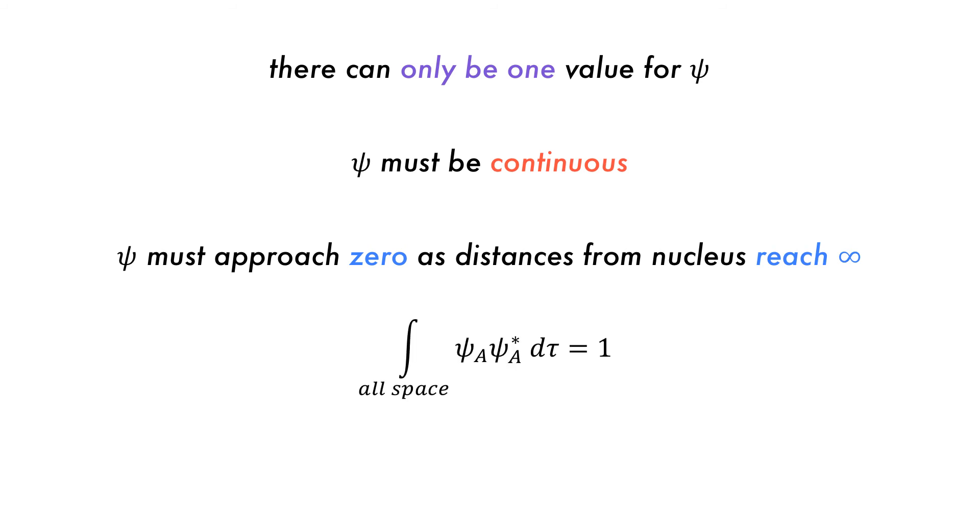The probability of finding an electron over all space must be one, that is, it must exist somewhere.